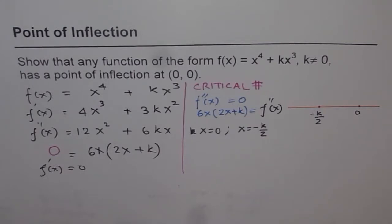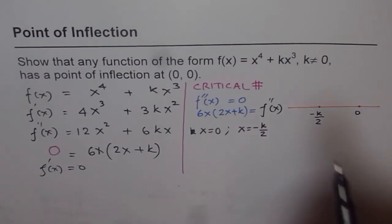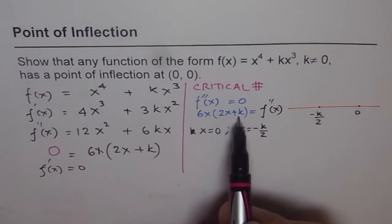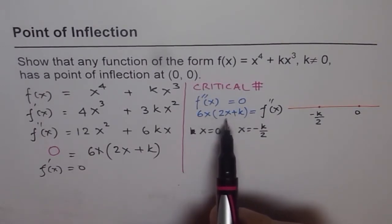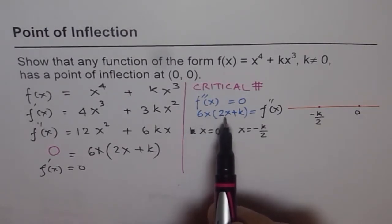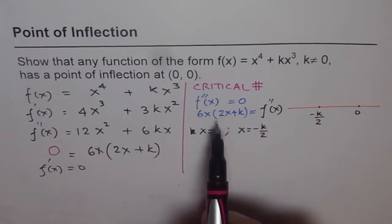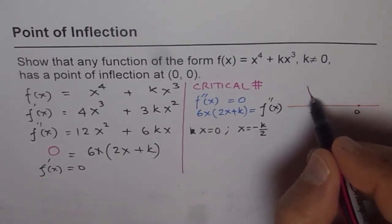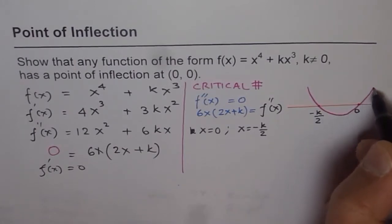Now, how can we say that the point of inflection exists at (0, 0)? Well, as you can see, 6x(2x + k), this represents a parabola. Since 6x and 2x when multiplied gives you a positive 12x^2, this parabola opens upwards. So if it opens upward, we can actually draw a parabola like this, going through the two zeros.